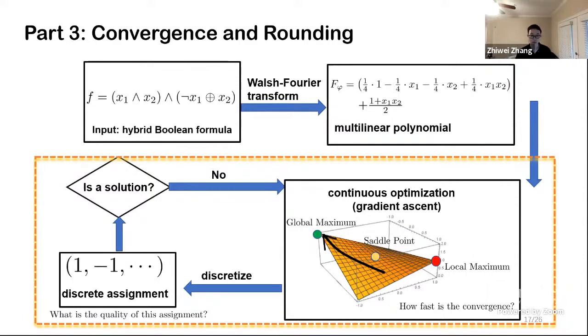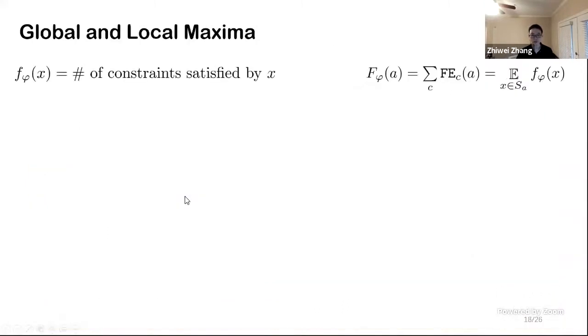Here comes to the last part and I believe that in this part a lot of questions can be raised. For example, can we say anything about global maximum, saddle points, or local maximum, or how fast is the convergence? Or after we discretize the convergence point, what is the quality of this assignment? Let's answer these questions regarding convergence and rounding.